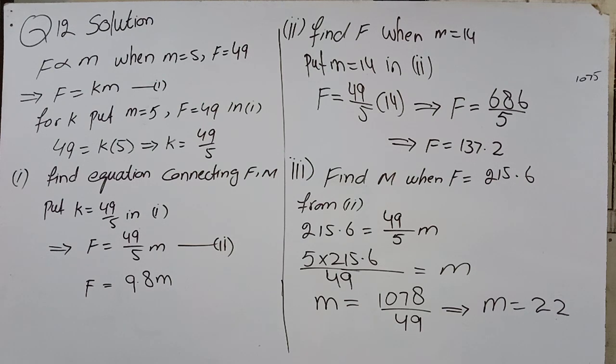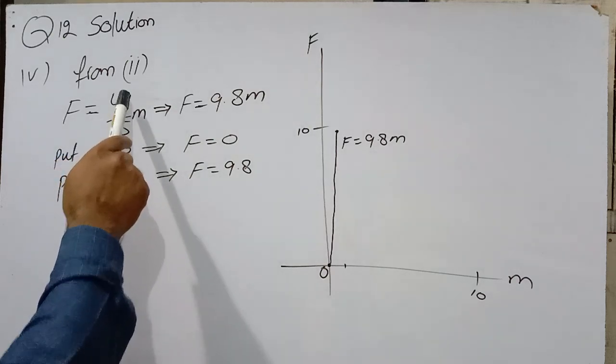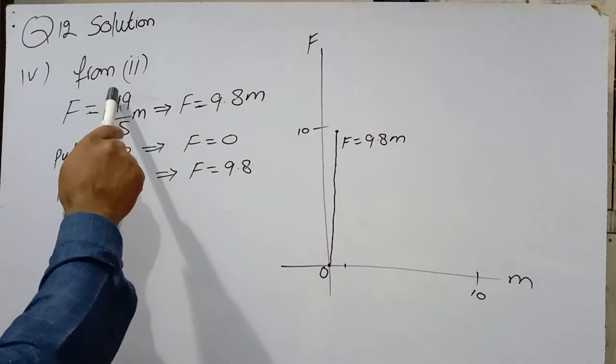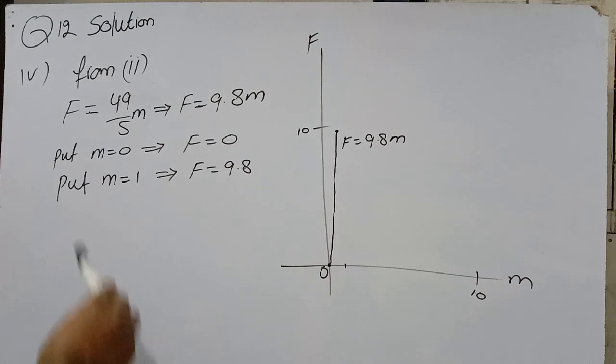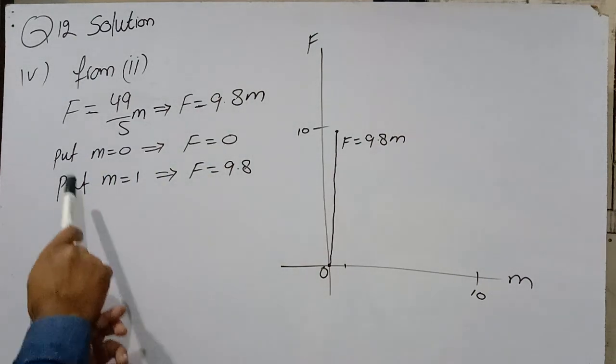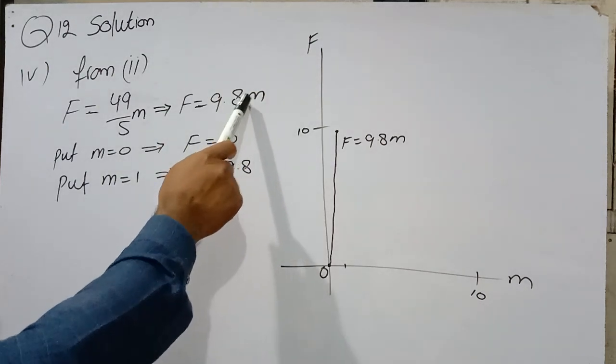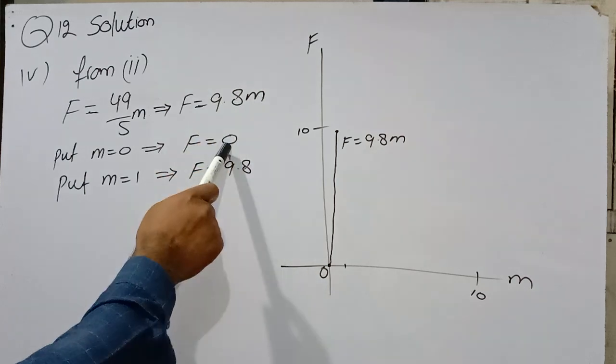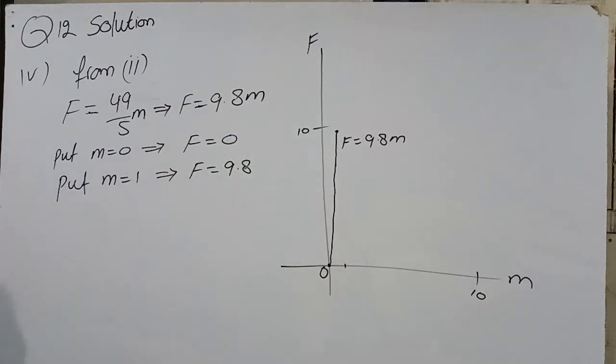Part 4: Draw the graph F against M. From equation 2, F = (49/5)M, which is F = 9.8M. For the graph, find values of M and F. Put M = 0, then F = 0. Put M = 1, then F = 9.8. Now draw the graph F against M.